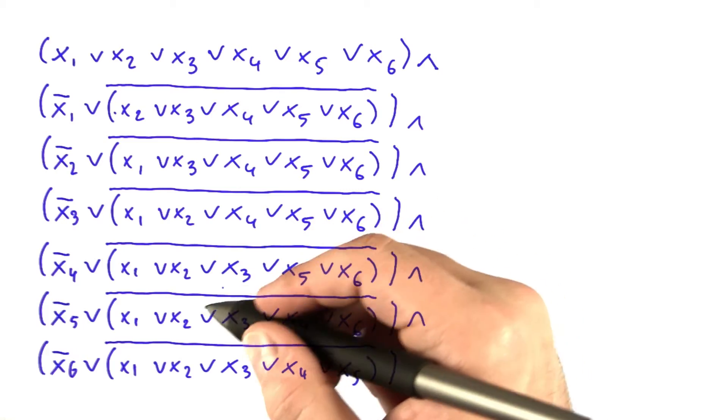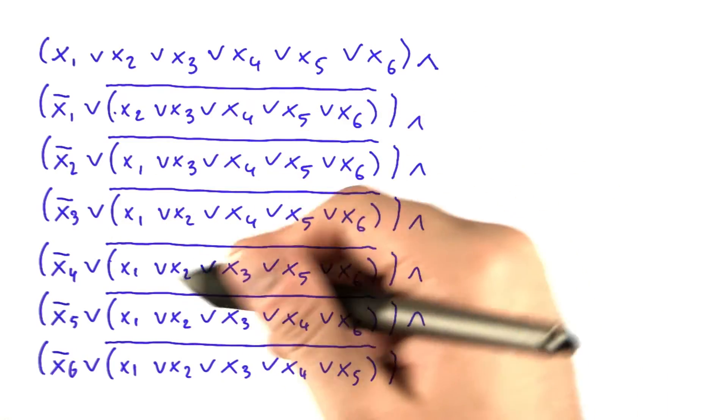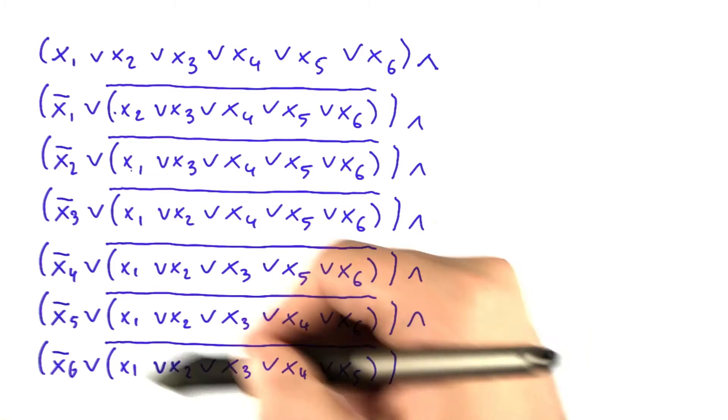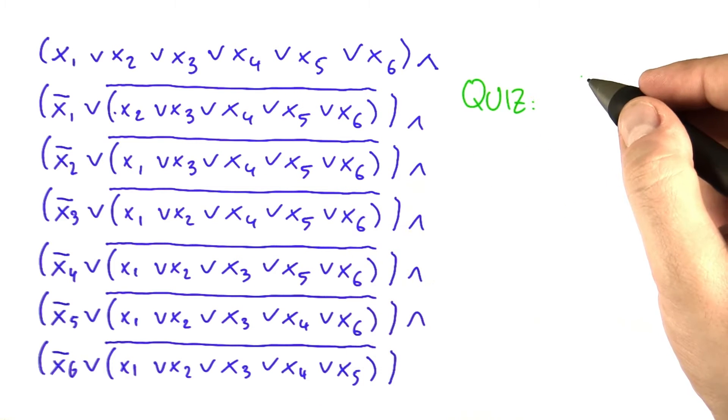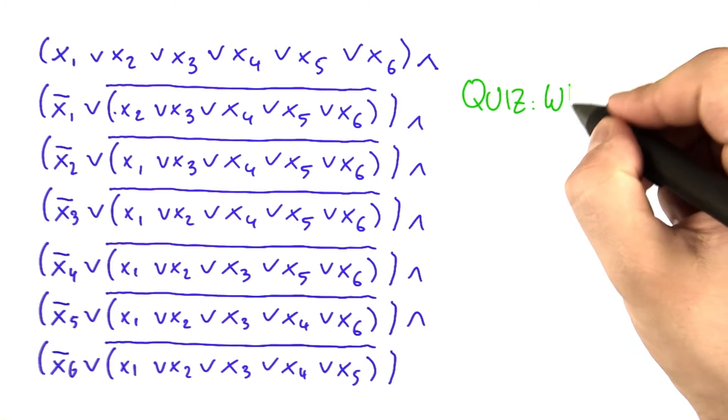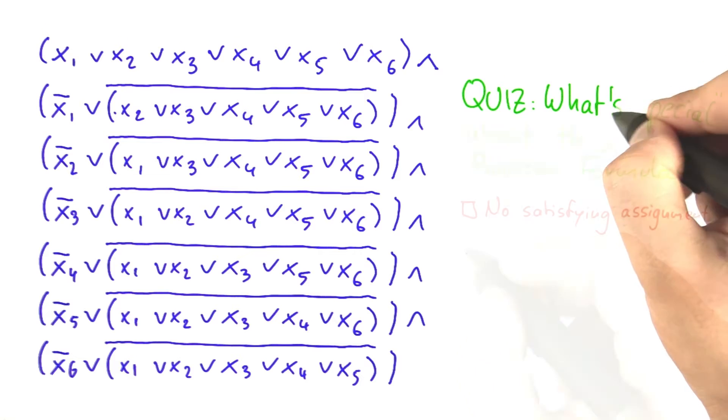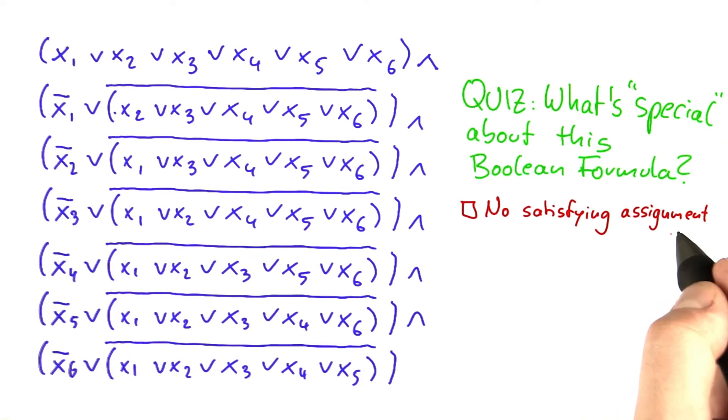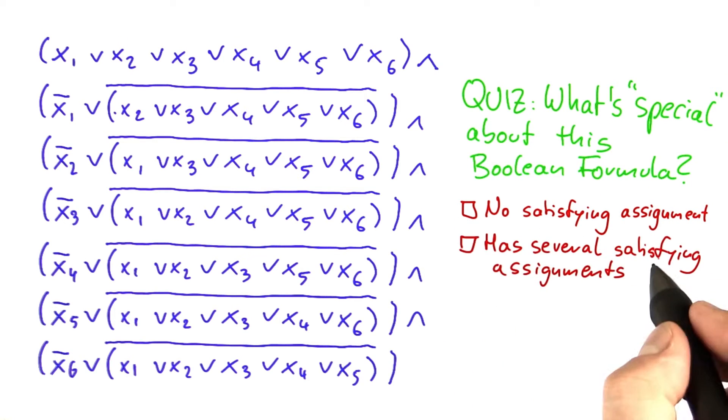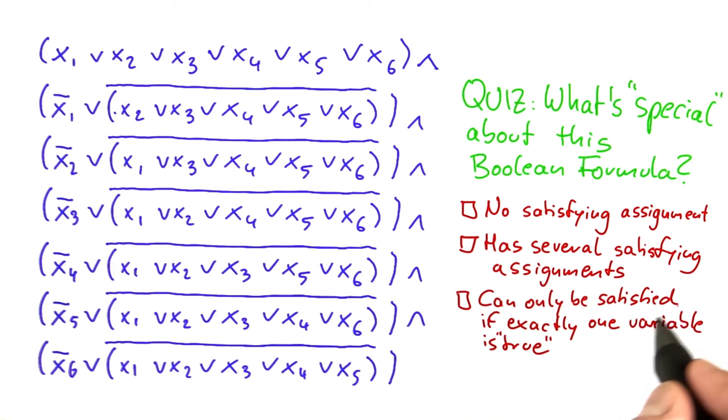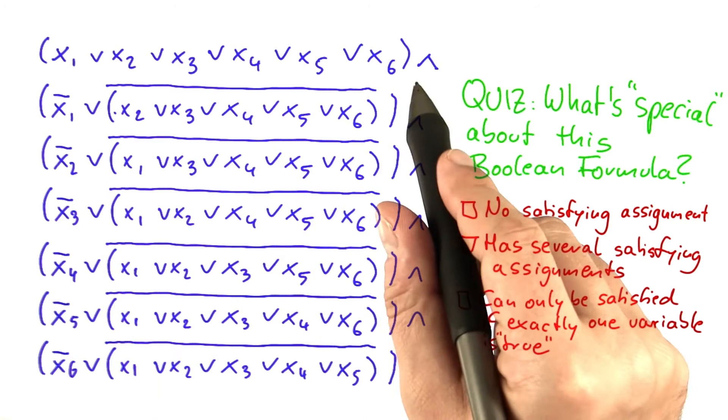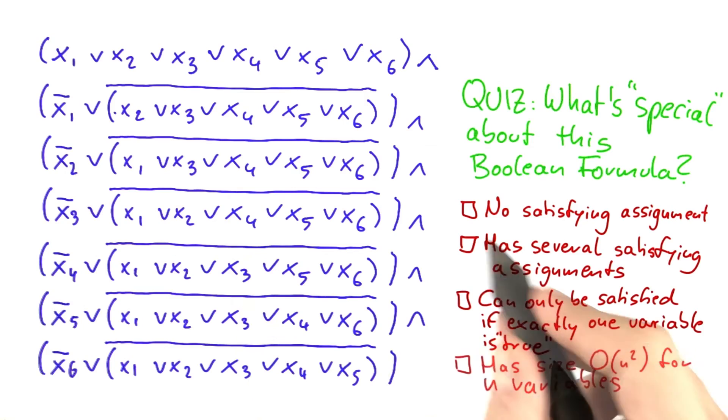Now probably it's a bit tough to figure out by yourself what the purpose of this formula is. I want you to figure it out, but I will give you a few choices. So what's special about this Boolean formula? Does it not have any satisfying assignment? Does it have several satisfying assignments? Can it only be satisfied if exactly one of those six variables is set to true?